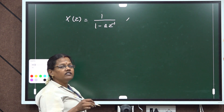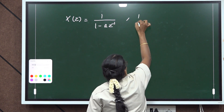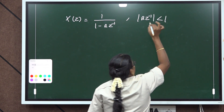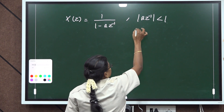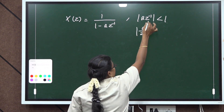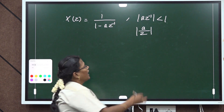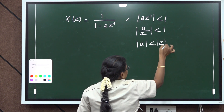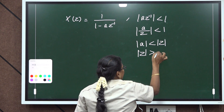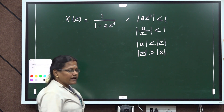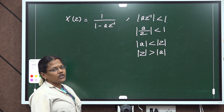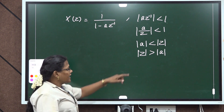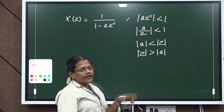Here mod(a z⁻¹) less than 1 can be written as mod(a/z) less than 1, which gives mod a less than mod z, so mod z greater than mod a. With this condition we can find the Region of Convergence. This is the Z-transform of a power n times u(n), and the ROC is mod z greater than mod a.